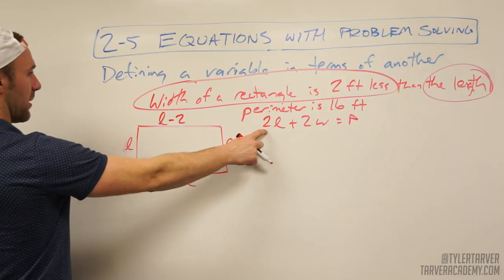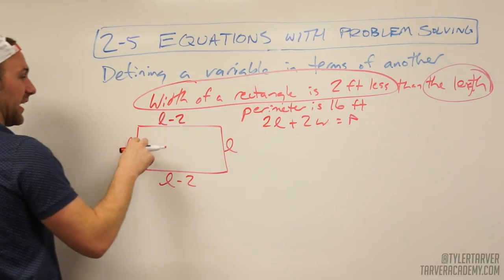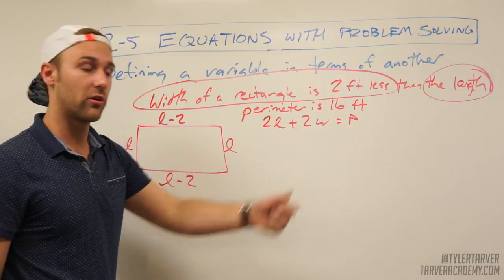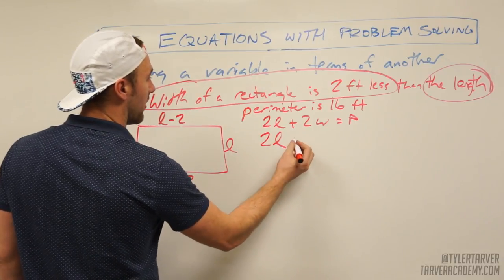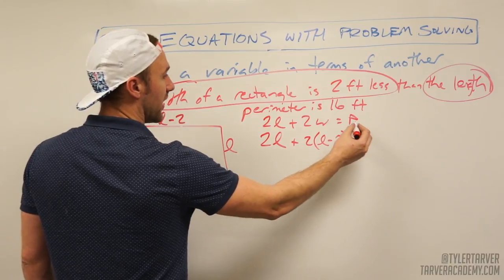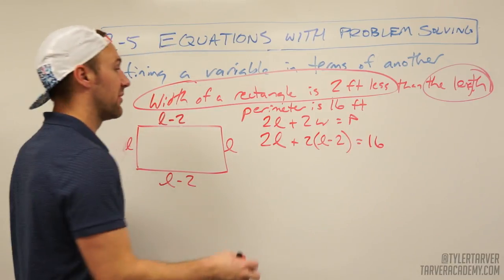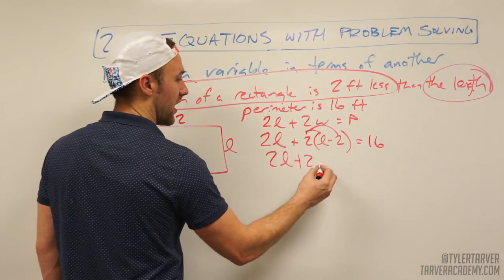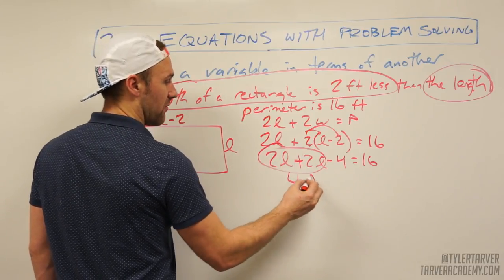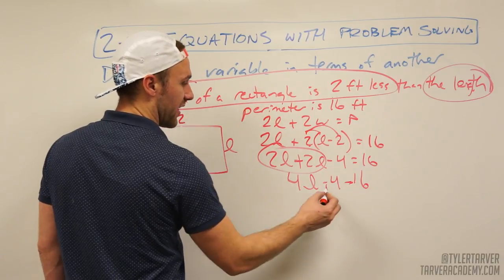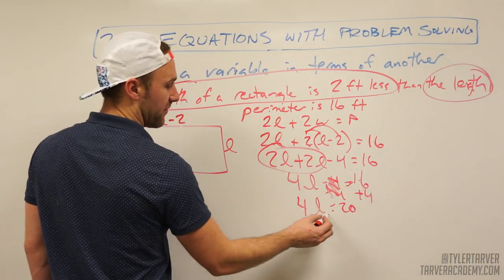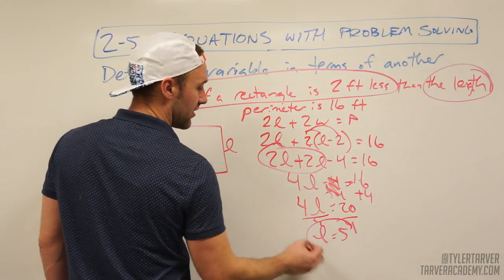Plug in what you know to find what you don't know. Two times L plus two times (L minus 2) equals 16. Now simplify — distribute: 2L plus 2L minus 4 equals 16. Combine like terms: 4L minus 4 equals 16. Add 4 to both sides: 4L equals 20. Divide both sides by 4: L equals 5.